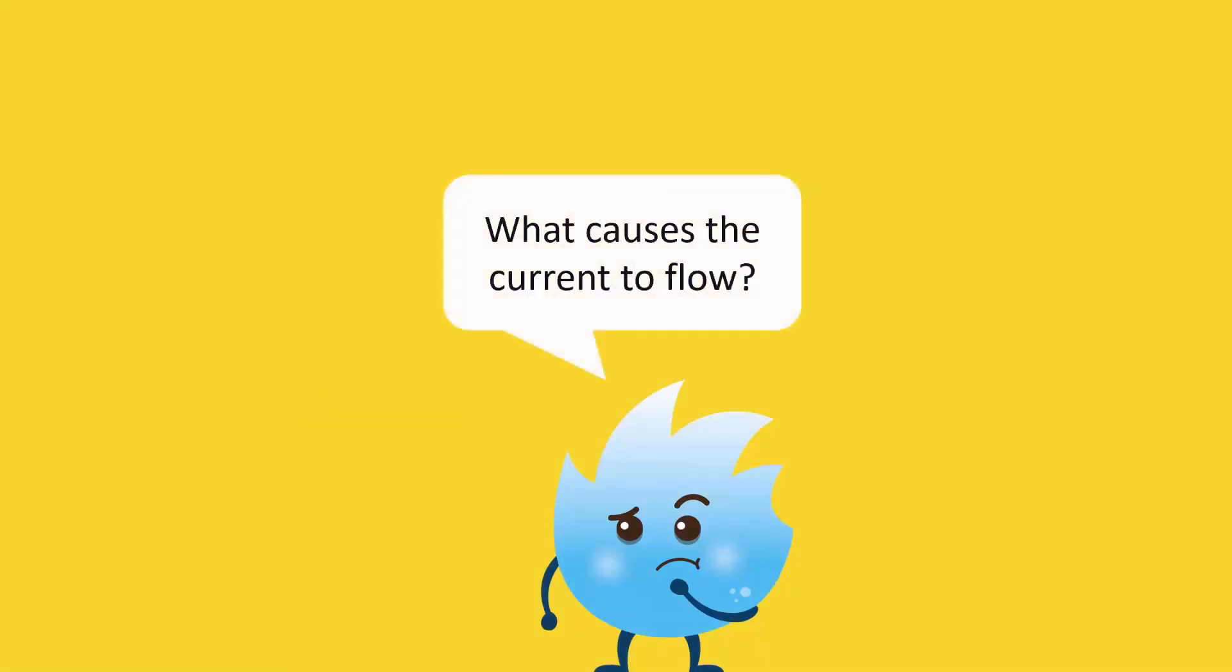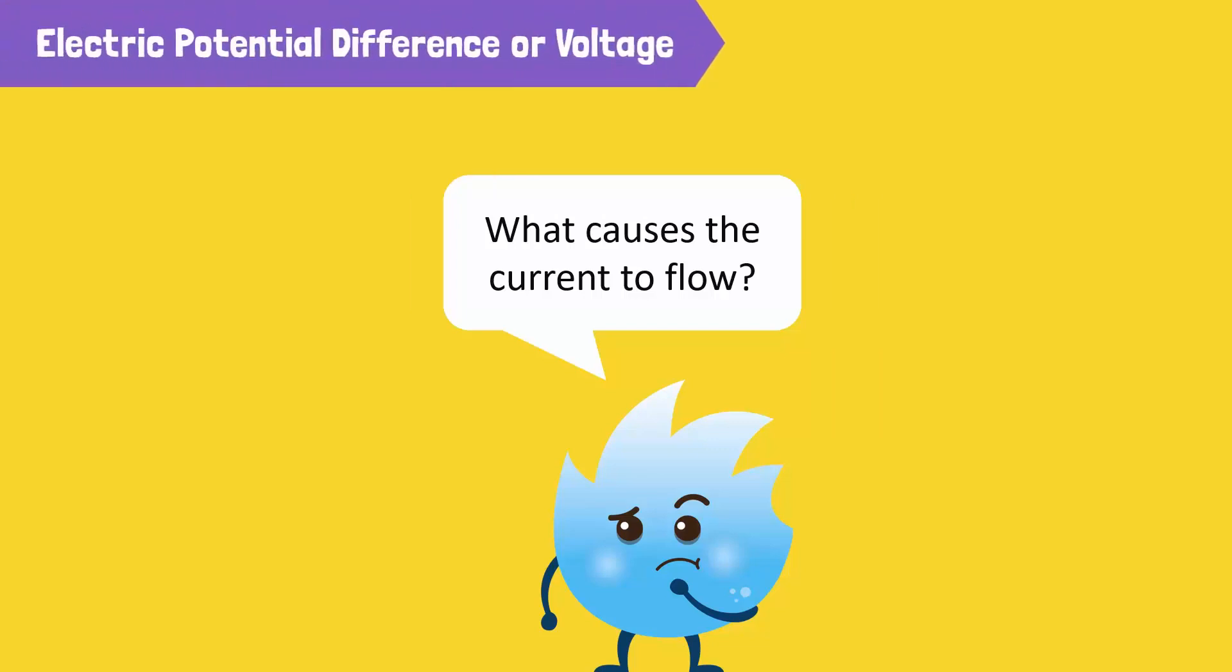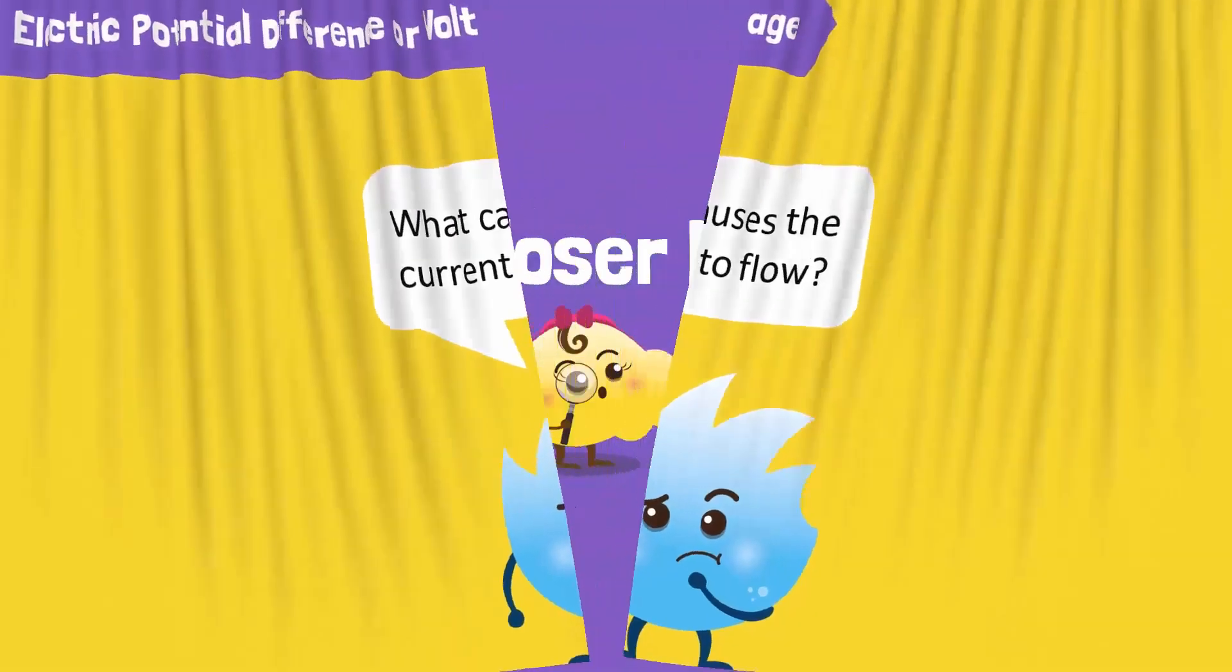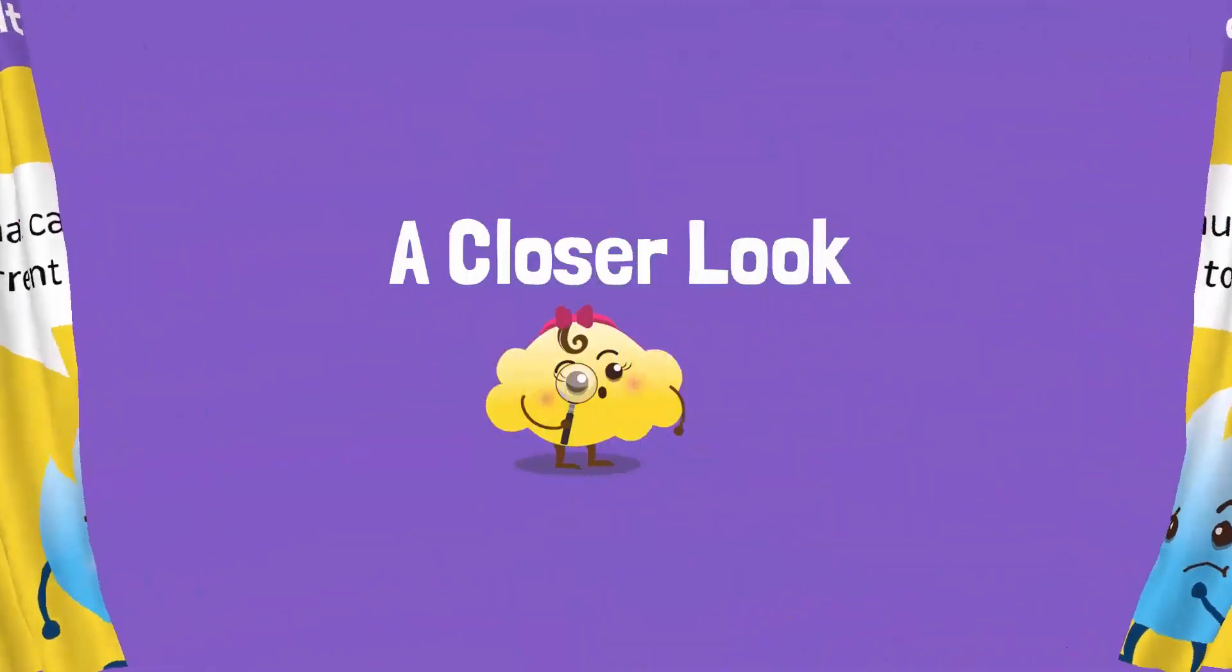But what causes the current to flow? That is an excellent question, Spikey! The current flows in a circuit due to electrical potential difference or voltage. Let's take a closer look to explain this concept.